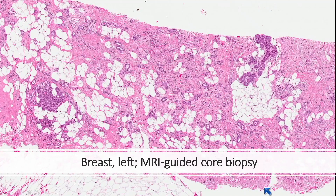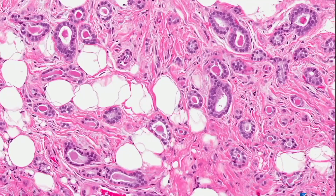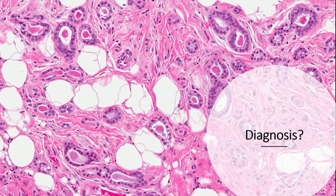This is a low-power view showing an infiltrative process. At higher magnification, we see some small glandular proliferation infiltrating the stroma, some in the fat. And at high magnification, we can see the cytological details of the glands. So — diagnosis.